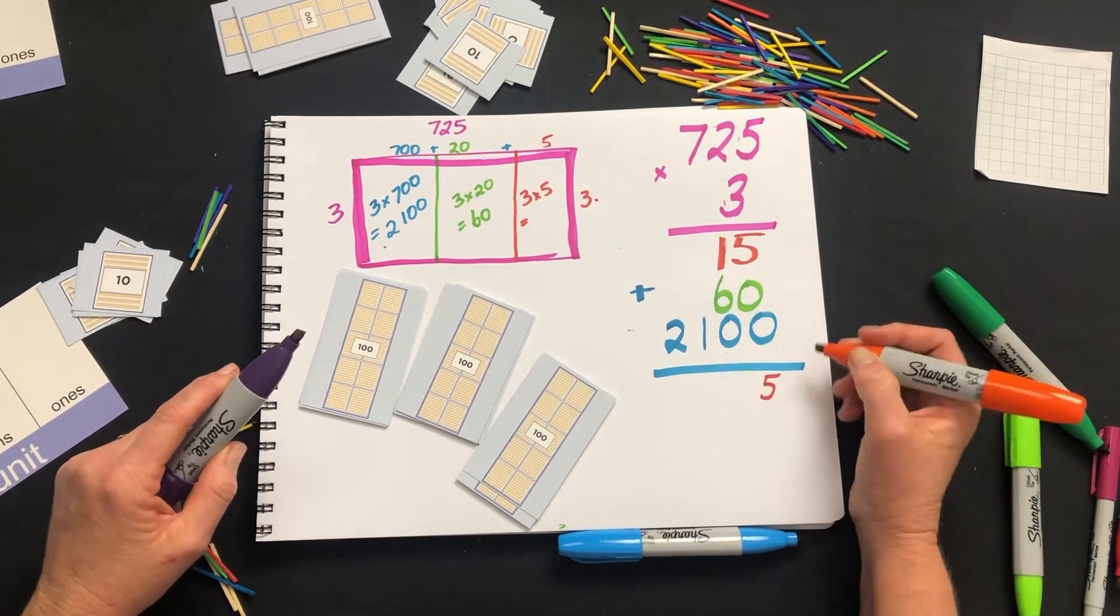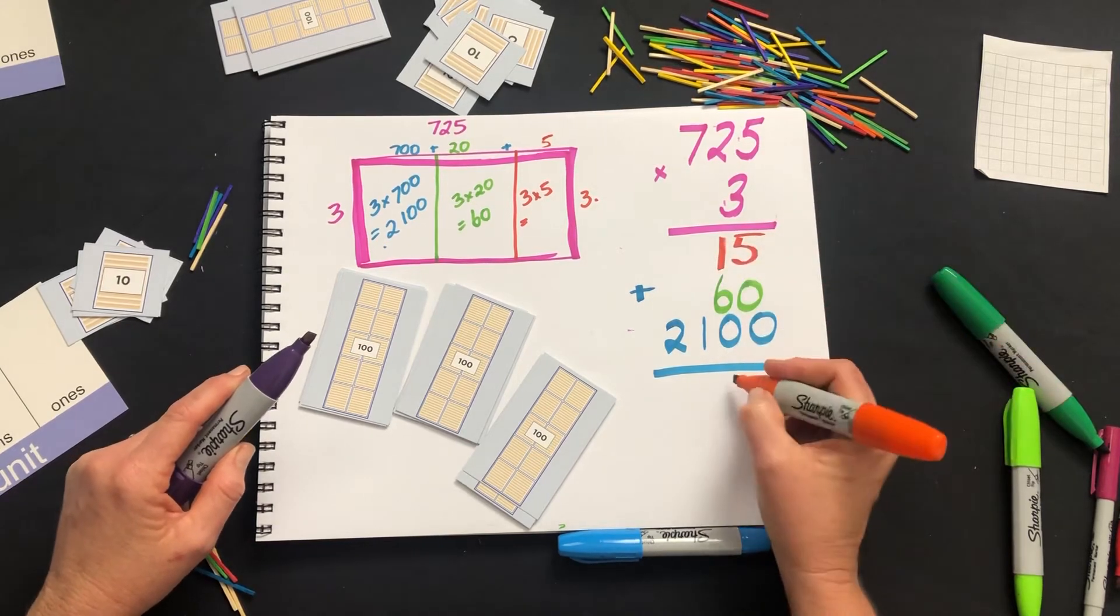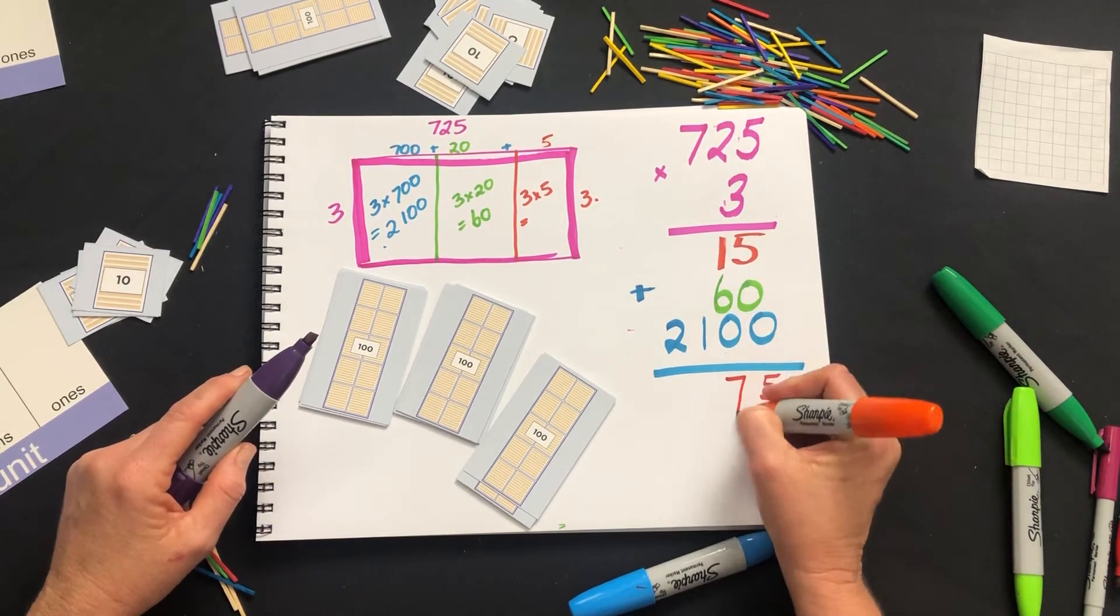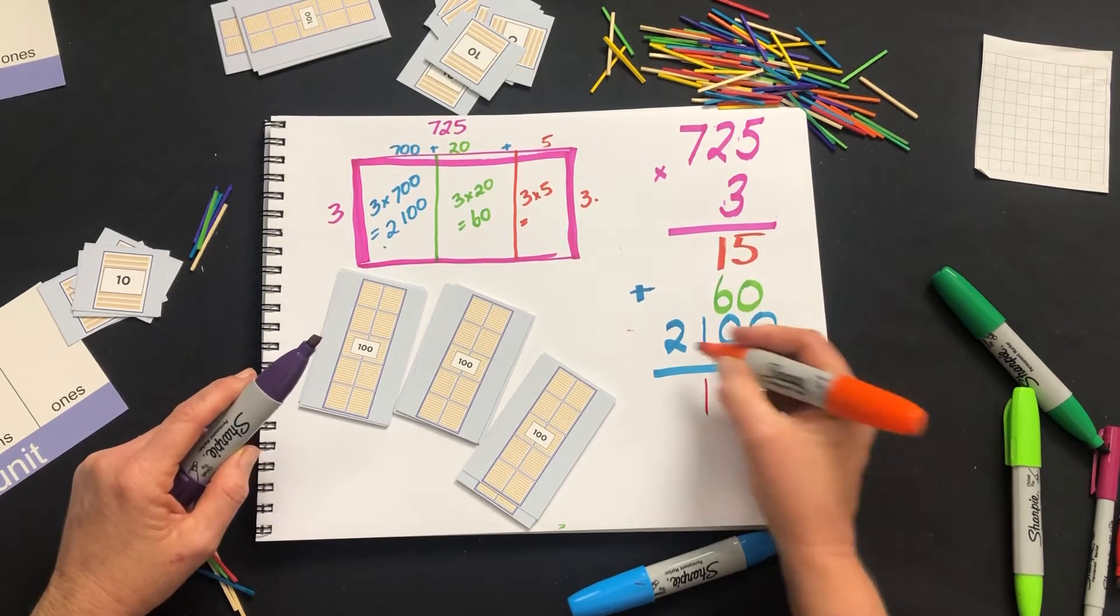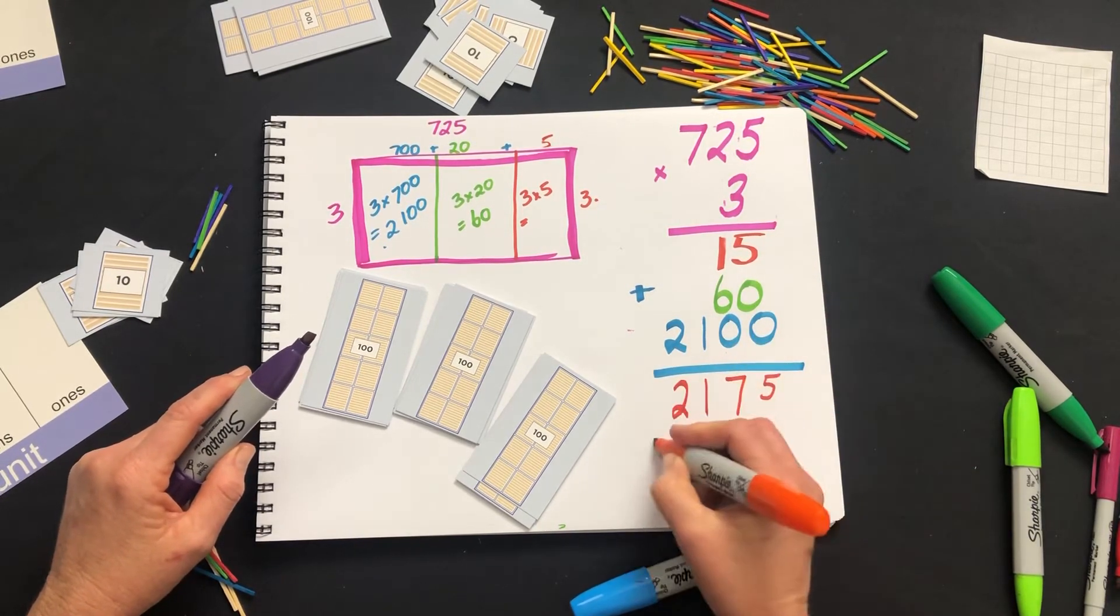5 plus 0 plus 0 is 5. 1 plus 6 plus 0 is 7. We have nothing to add to that 100 there and nothing to add to the 2000.